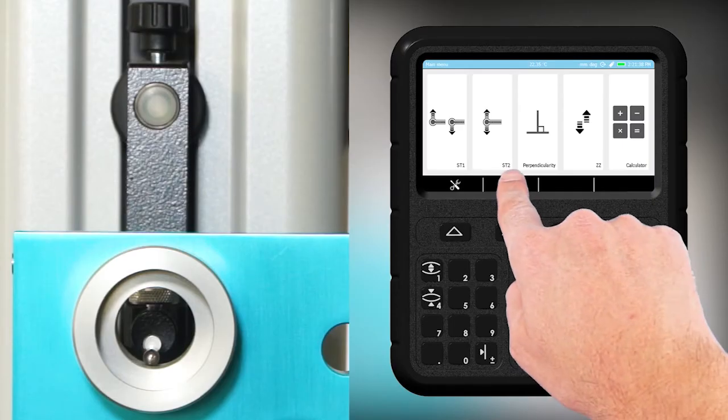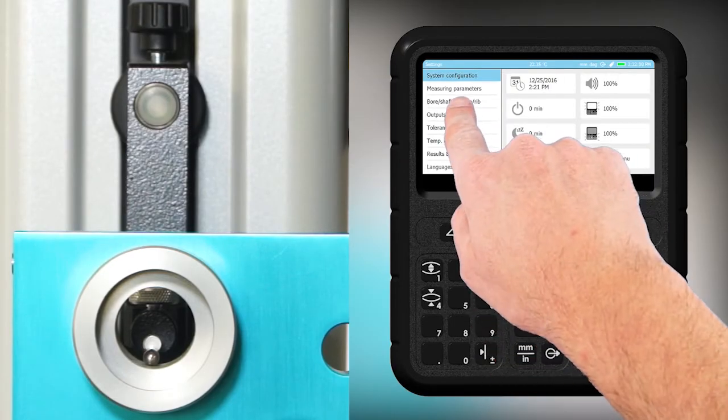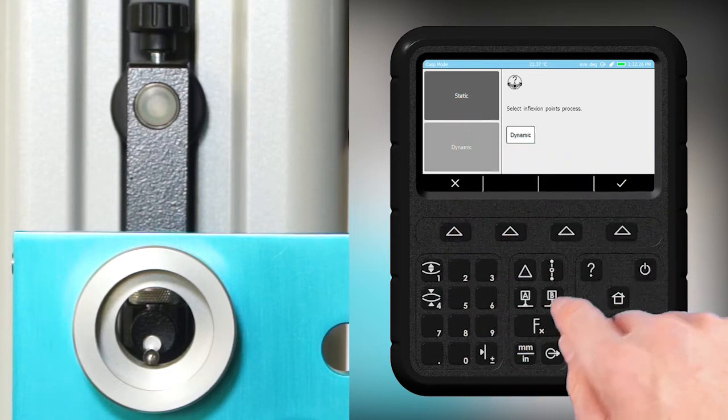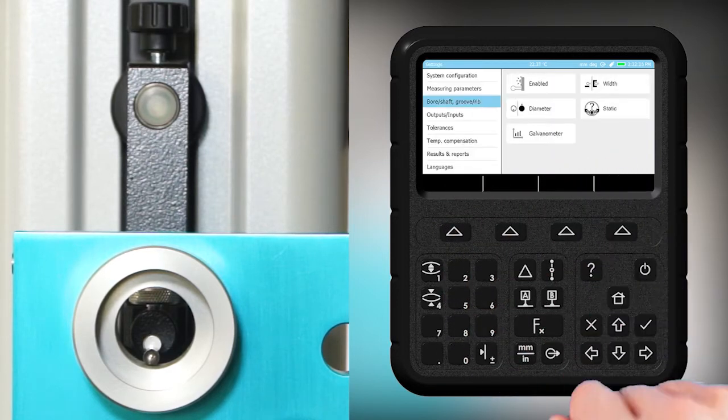From the main screen, enter the system options menu. Select the option labeled foreshaft groove rib from the measurements tab to find and measure the culmination point. Next, select static measurement and press the check mark to accept this setting.